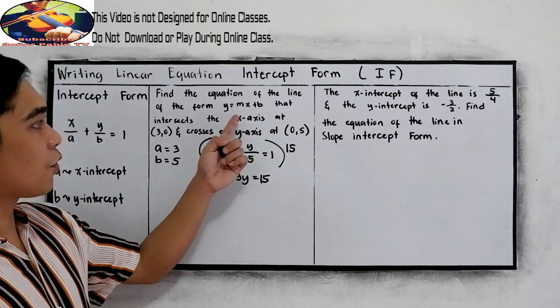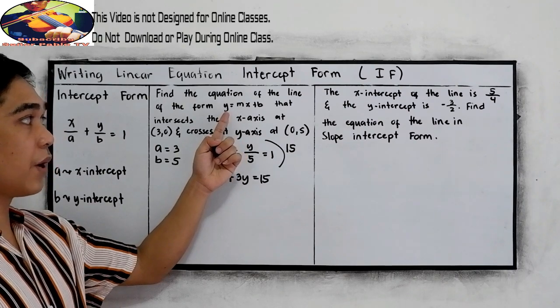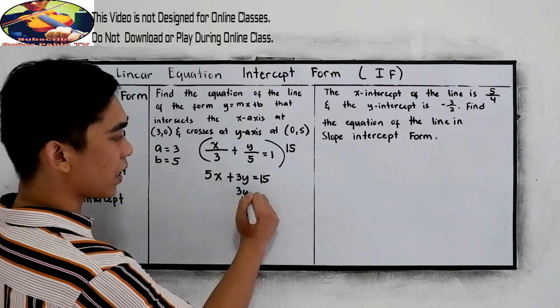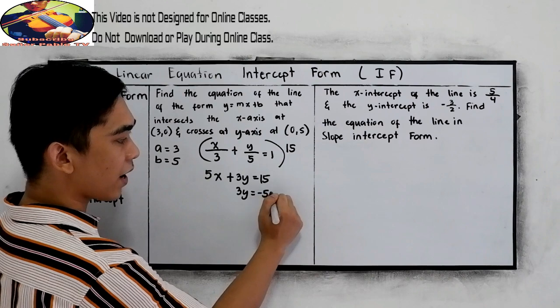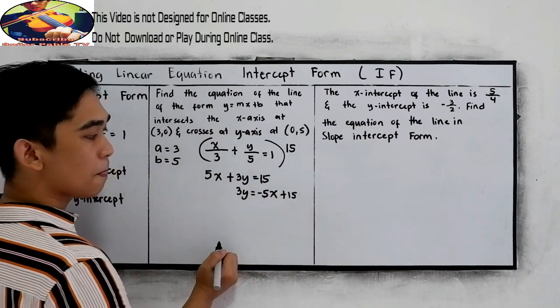We are looking for the equation in the form y equals mx plus b. So we have 3y equals, on the left, negative 5x, by the subtraction property of equality, plus 15.